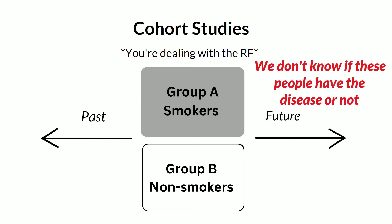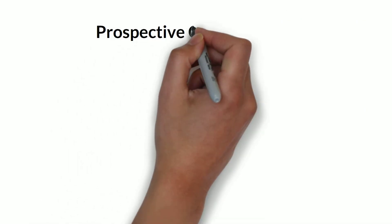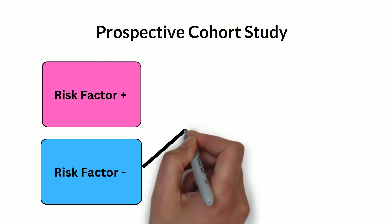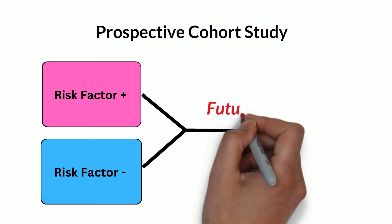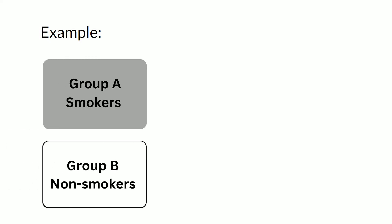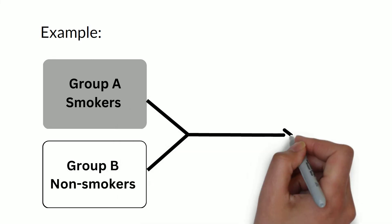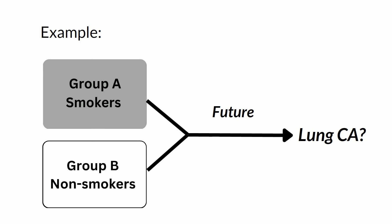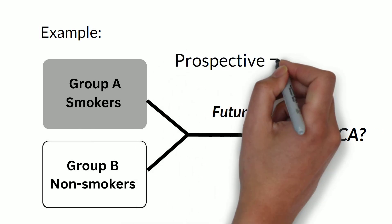So now let's see what a prospective cohort study is. In this type of study, you follow the patients into the future — you follow patients with and without the risk factor into the future to check if they will develop the disease or not. For example, people in group A are smokers and people in group B are non-smokers. You follow these groups into the future to check if they will develop lung cancer. So prospective means following into the future.